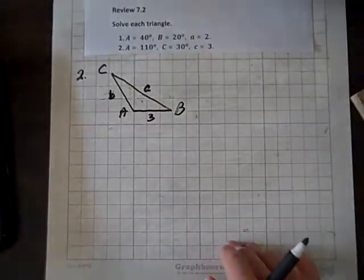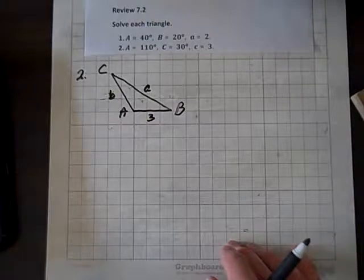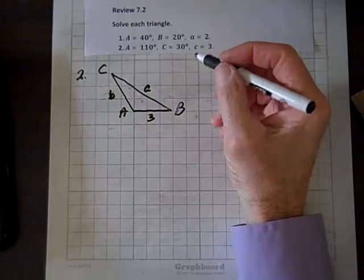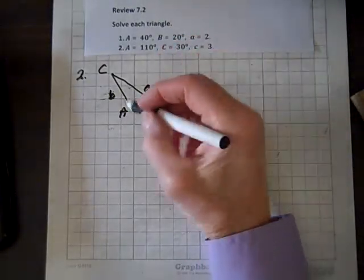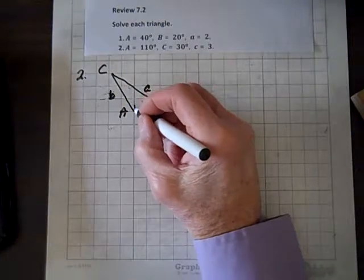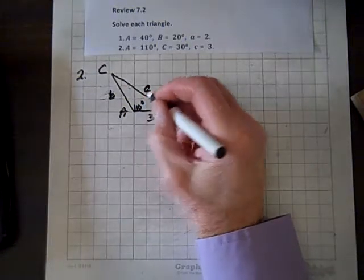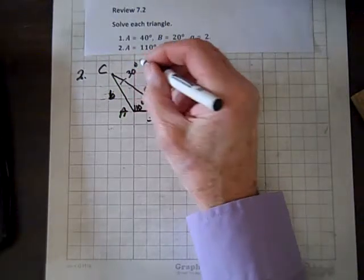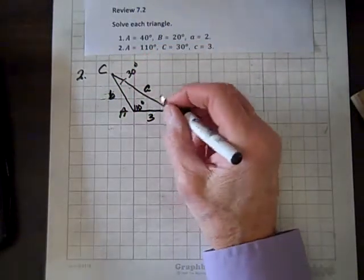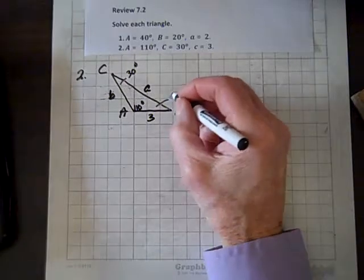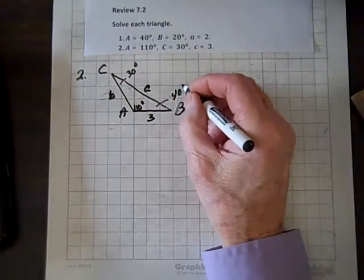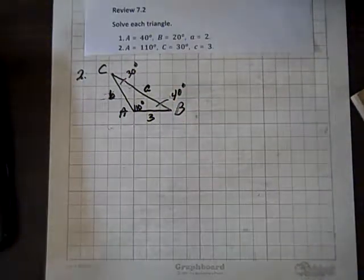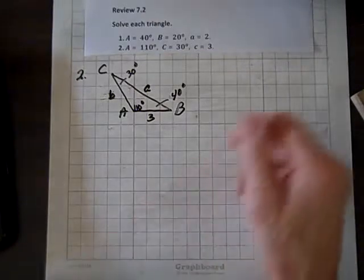Now we're going to do question 2. Angle A is 110 degrees and this angle is 30 degrees. So this angle must be 40 degrees, because the sum of the interior angles of a triangle must add up to 180 degrees.